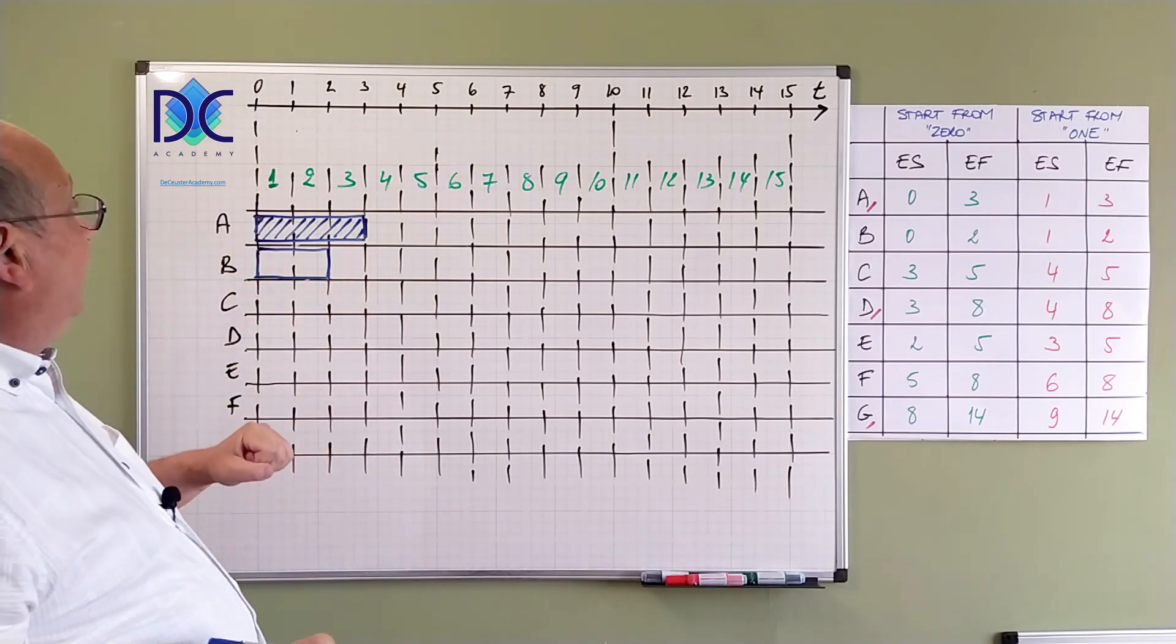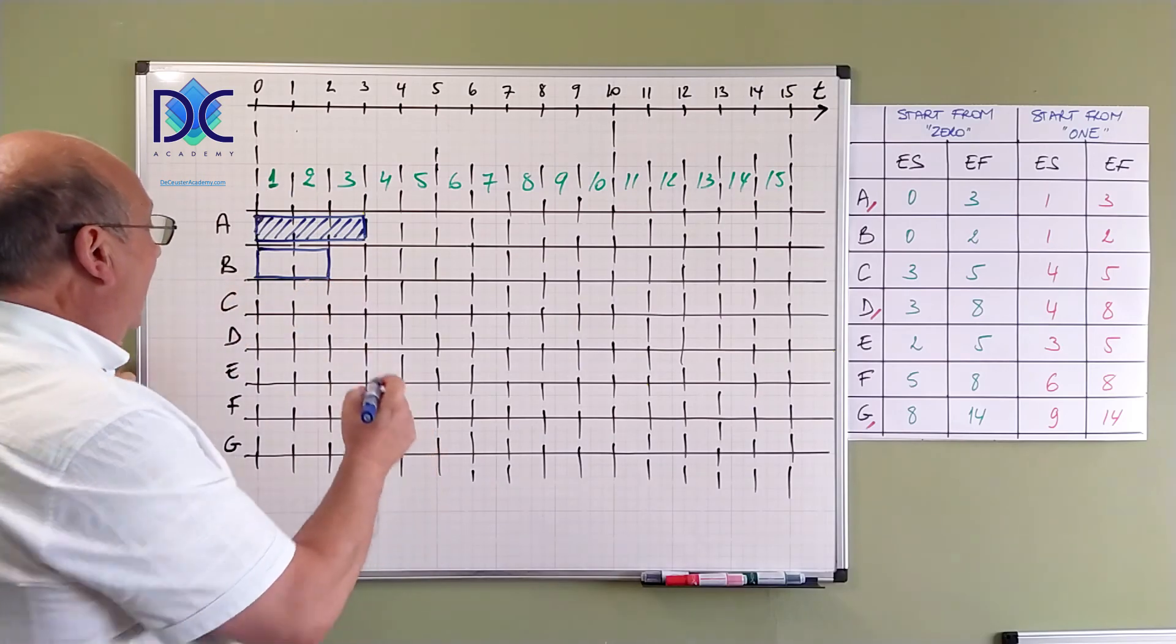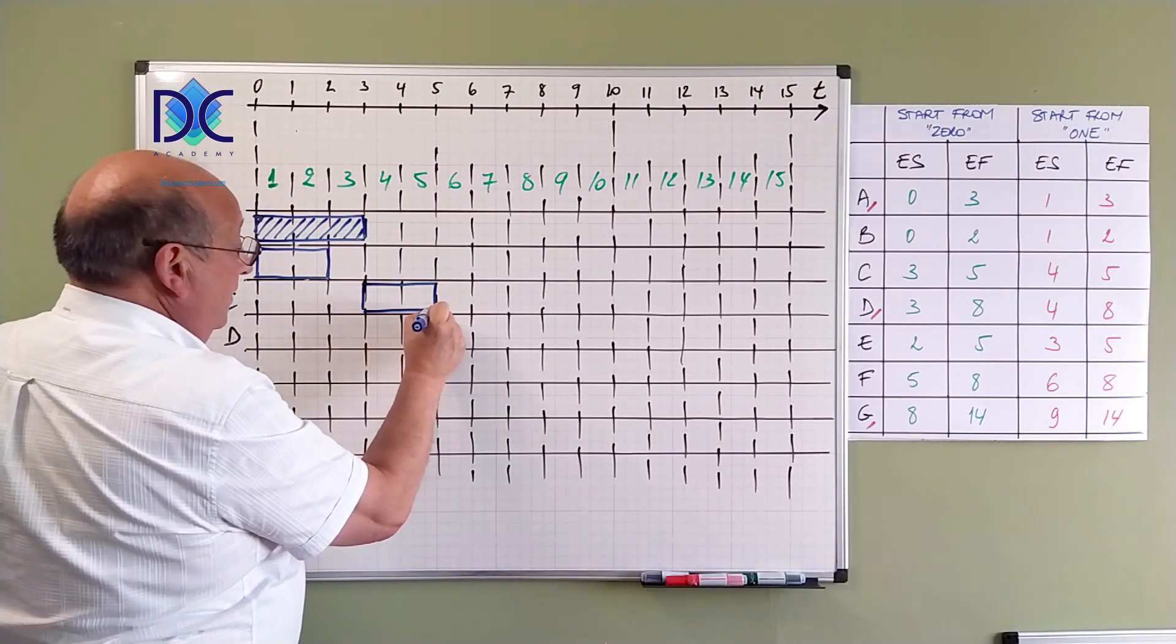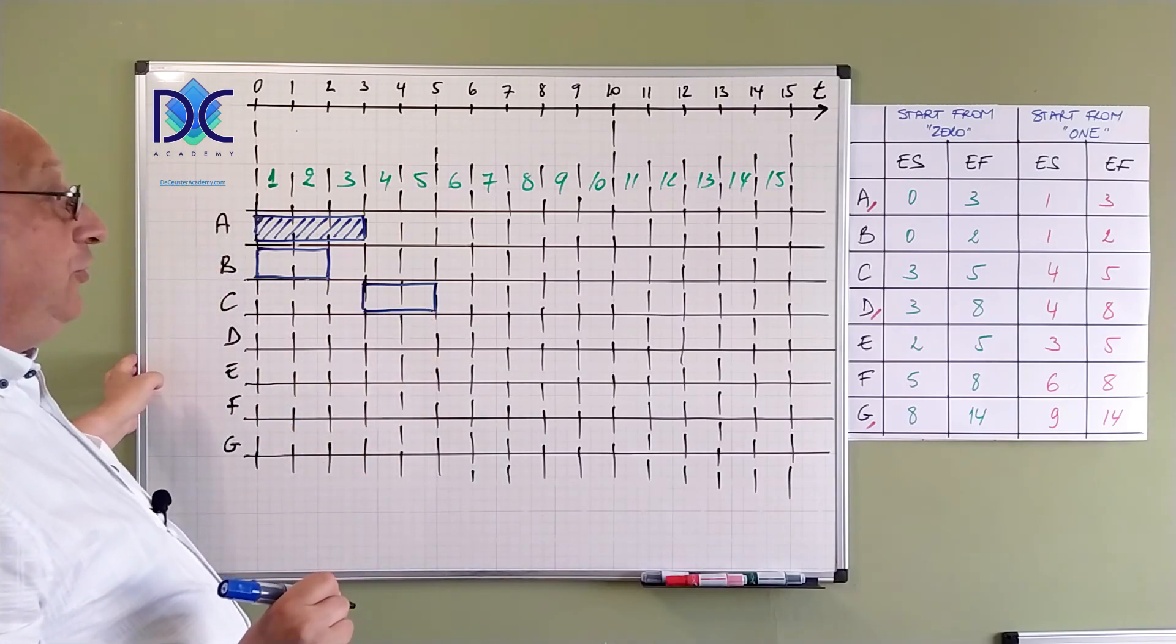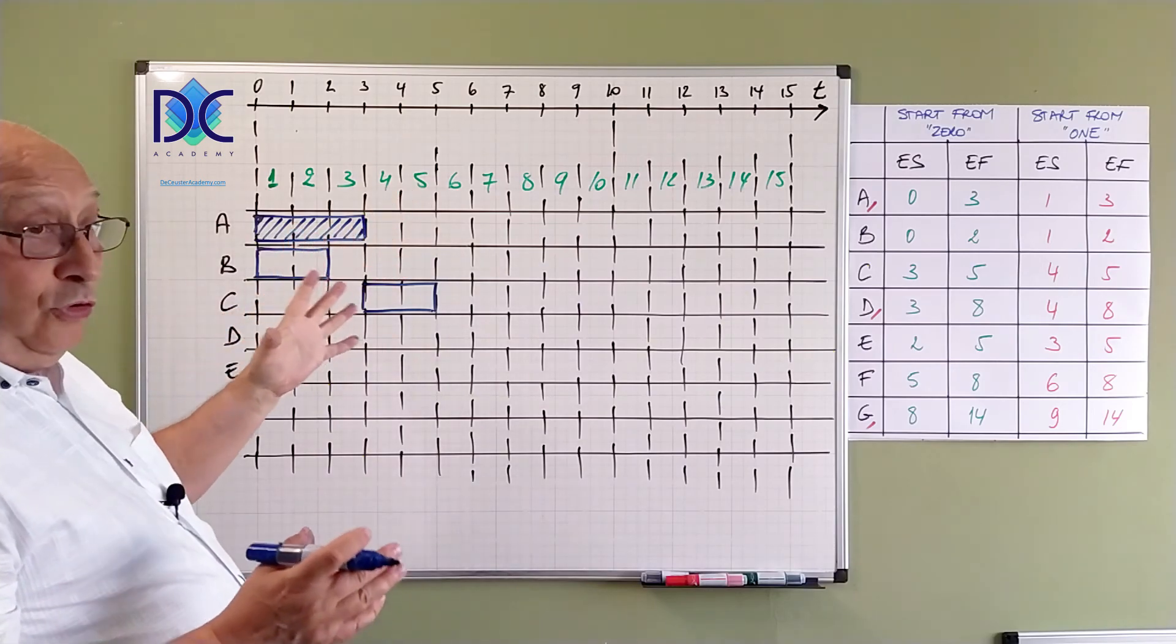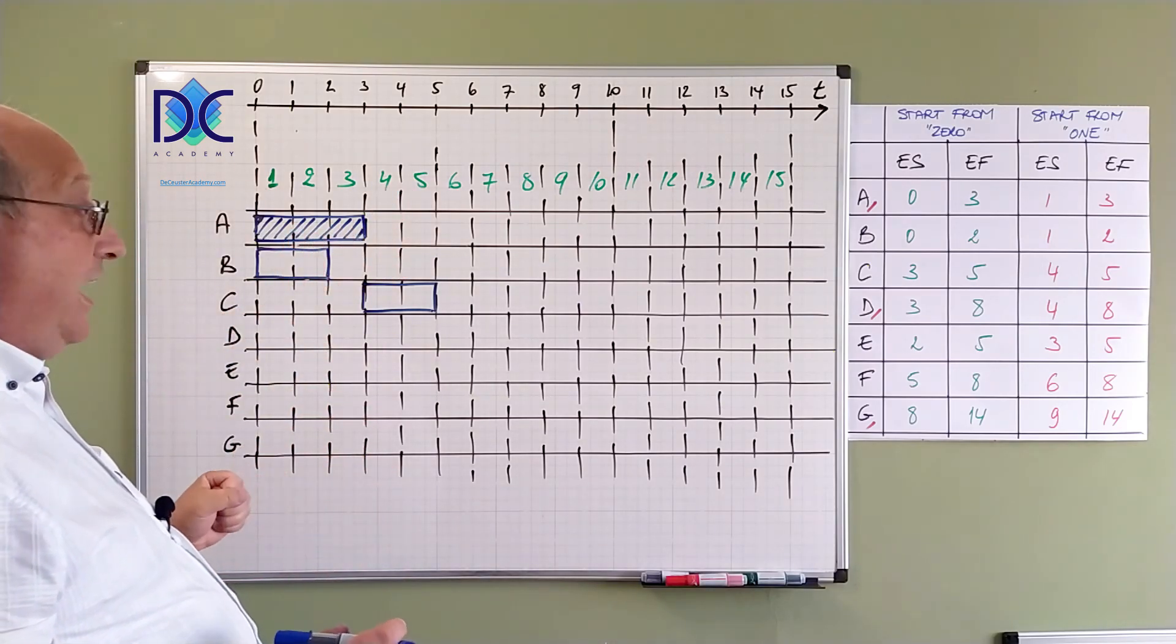For B from 0 till 2 or also from 1 till 2, and this is not critical. We have C from 3 till 5. C is also not critical. And we also have the periods 4 and 5. The two elements are exactly the same.